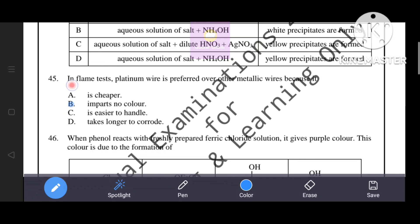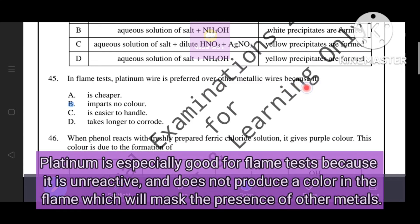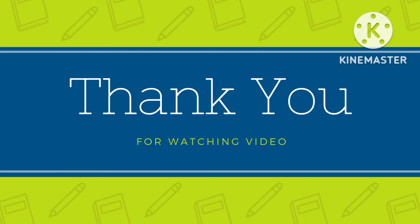Next question. In flame test, platinum wire is preferred over other metallic wires because... As you know, platinum wire is especially good for flame test because it is unreactive and does not produce a color in the flame which will mask the presence of other matters. The correct answer is: it imparts no color, means option B is the correct answer.